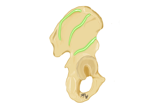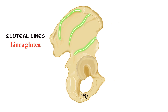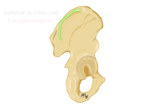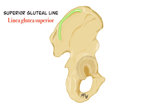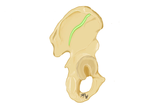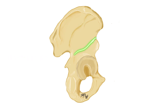The lateral aspect of the ala osis ilii is called the facies glutea because three gluteal muscles are attached to this area. There are curved linear protrusions at the attachment points of each muscle, known as gluteal lines, or lineae gluteae in Latin. These are the superior gluteal line (linea glutea superior), the anterior gluteal line (linea glutea anterior) which is the longest one, and the inferior gluteal line (linea glutea inferior).